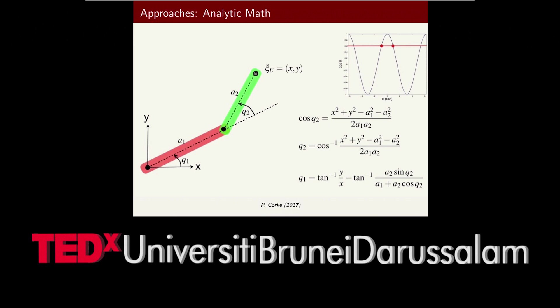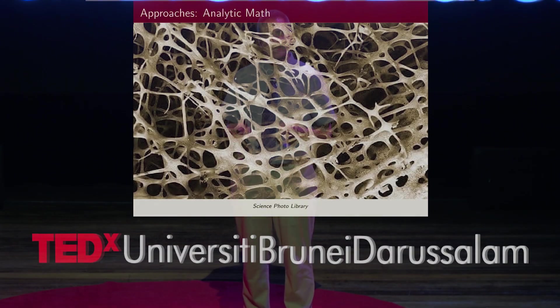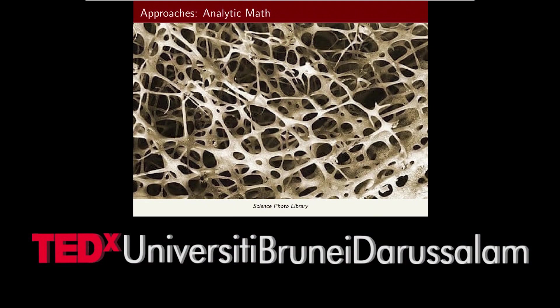What are ways to do that? One would be using analytic math — trying to find closed-form mathematical expressions to describe what's going on. Here you see an example for a simple robot arm that just has two links, and you can write down how it behaves with sines, cosines, and so on. That is very powerful. But what if you have a structure like bone in the human body? Can you write down the force distribution in a structure like that with sines and cosines? Probably not. So now we need something different.